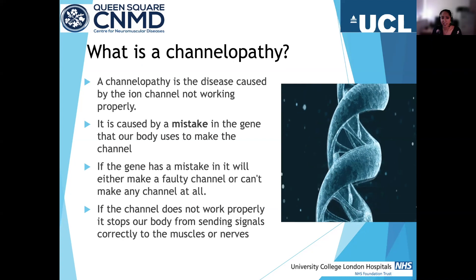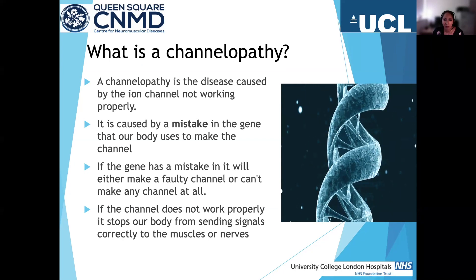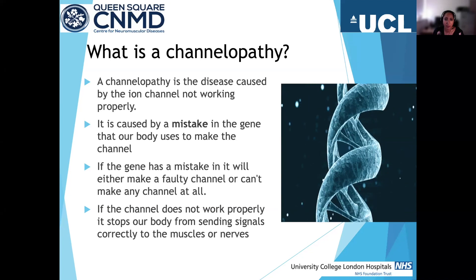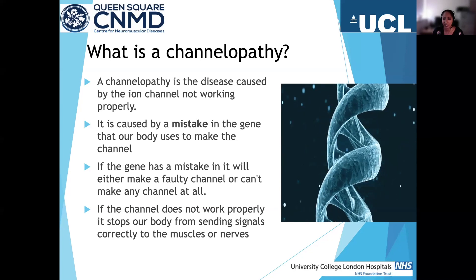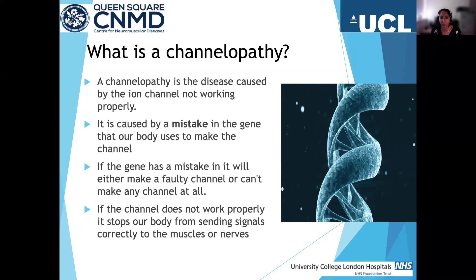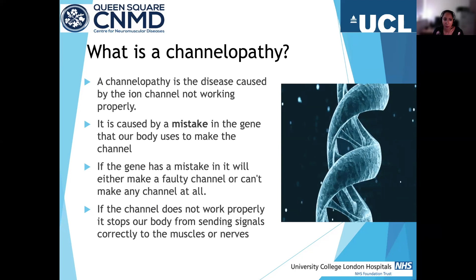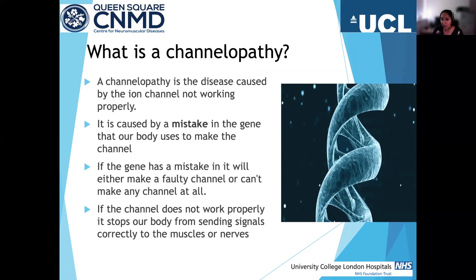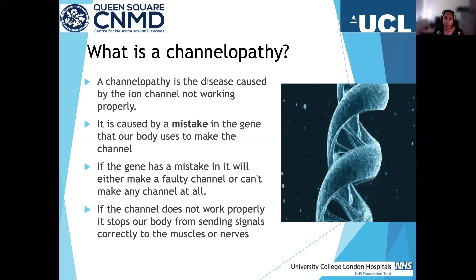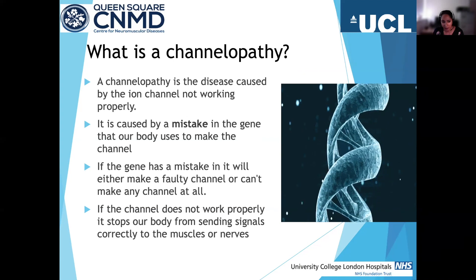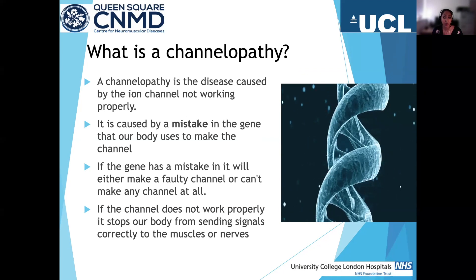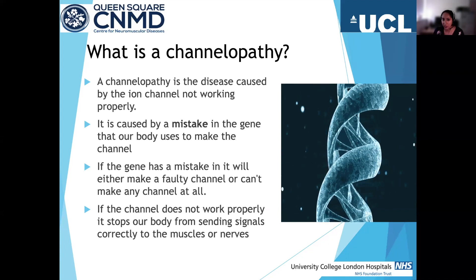So what is a channelopathy? A channelopathy is a disease caused by the ion channel not working — it's due to a problem in the ion channels in your muscle. It's caused by a mistake in the gene that your body codes for the protein that makes the channel. So the protein that's made isn't made correctly. The mistake might make the channel not work properly, or it might mean you can't make the channel at all, so you don't have enough of it. Depending on your condition, the mistakes work in slightly different ways.